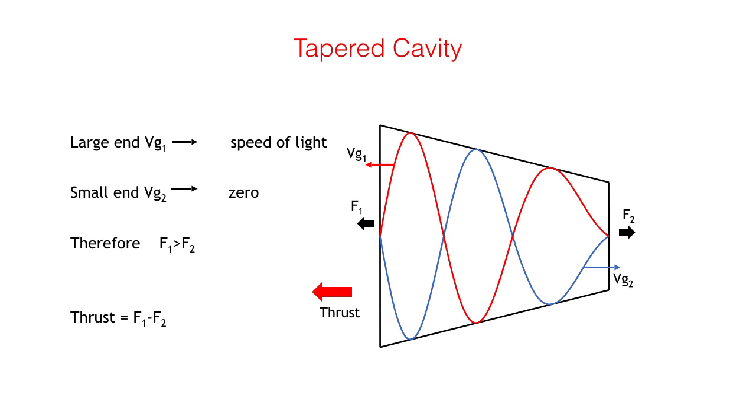Clearly the end forces in a constant diameter cavity will cancel each other out. However, if the cavity is tapered, the force at the larger end F1 will be greater than the force at the smaller end F2. A net force on the cavity will therefore exist, which we call thrust, where thrust equals F1 minus F2.